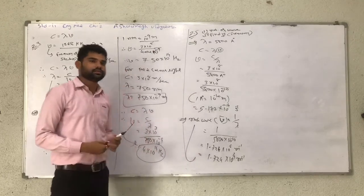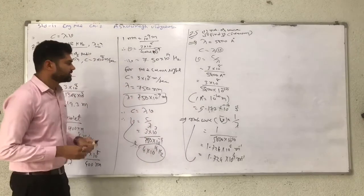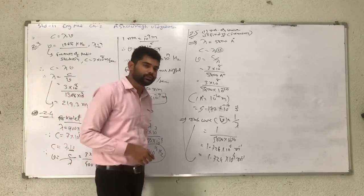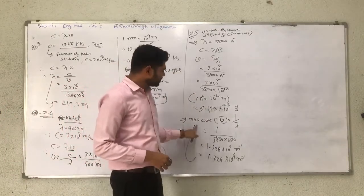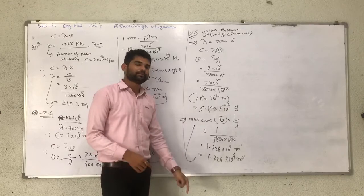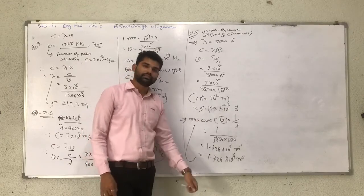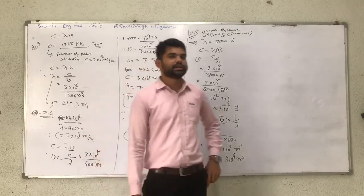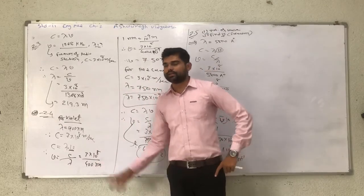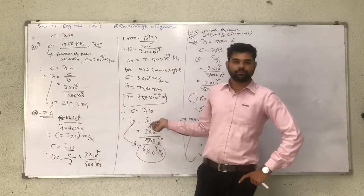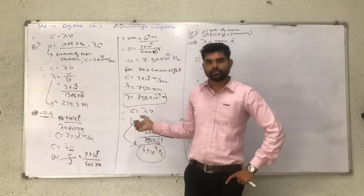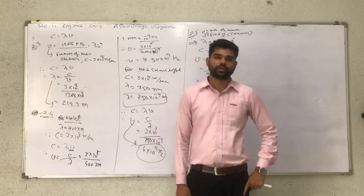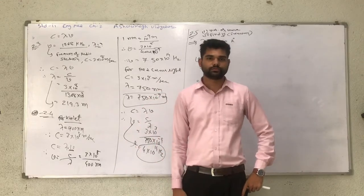So, only two equations are used: C is equal to lambda into mu, and nu-bar is equal to 1 divided by lambda, giving 1.724 into 10 raise to 4. Please write down these concepts and questions in your notebooks and solve the exercise questions as well. Thank you guys.